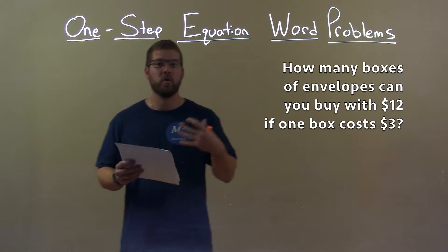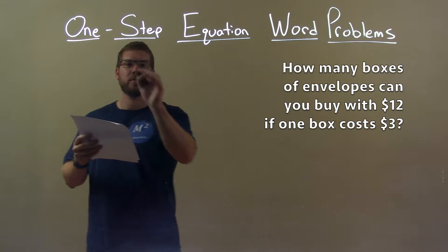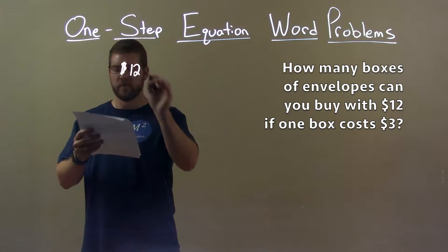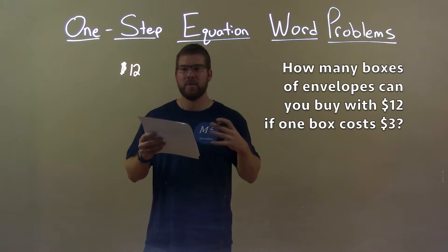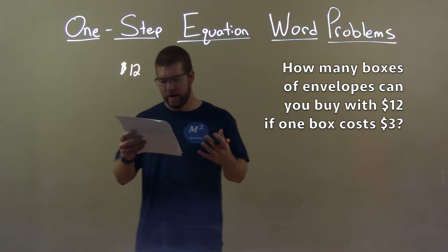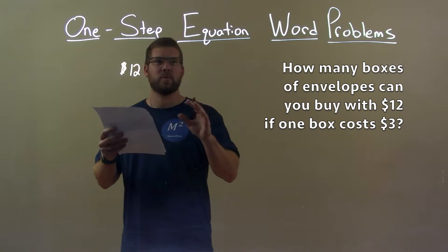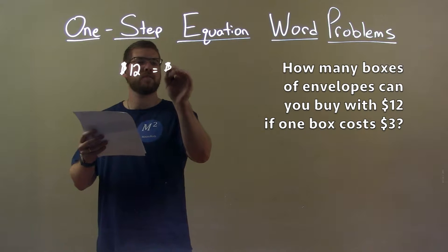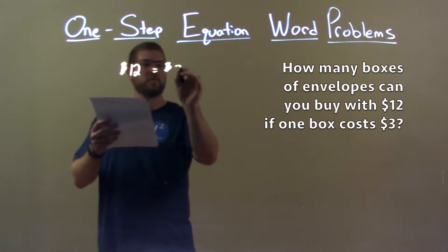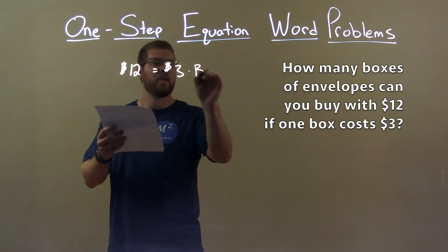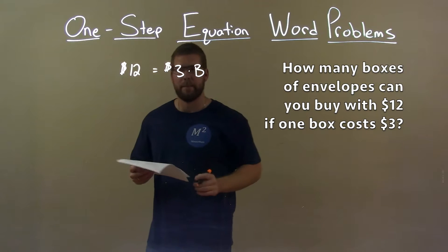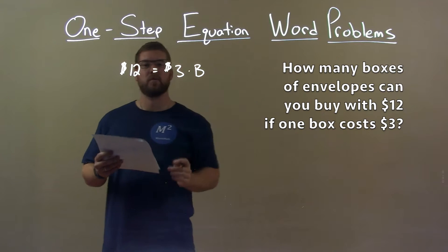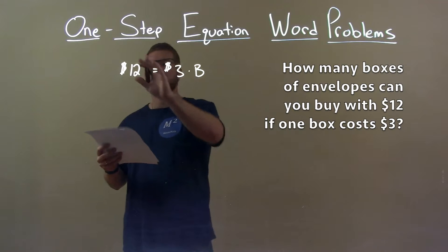With that information, I want to create an equation. $12 being the total money I have. How many boxes of envelopes can I buy for $12 equals the cost of each box of envelopes, which is $3, and multiply that by the number of boxes. So we'll label that B. B, number of boxes times $3, we're going to see how much we can get for $12.